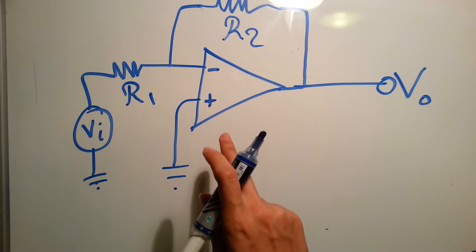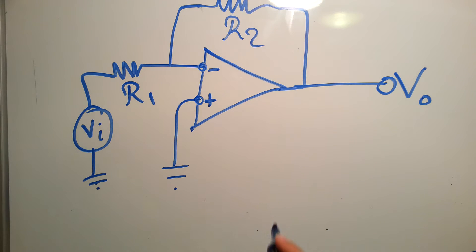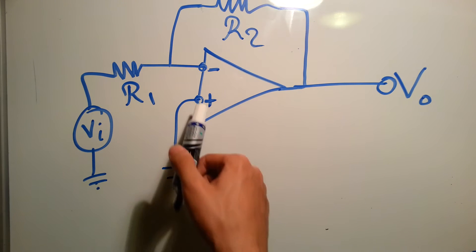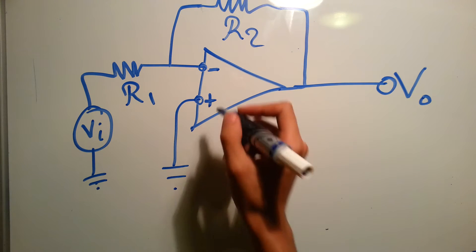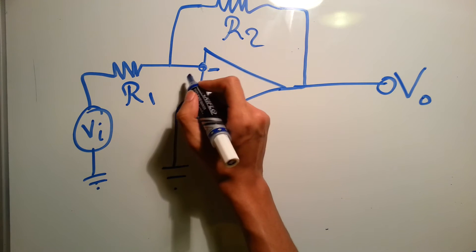So first of all you should know that these two nodes over here are always equal. V1 always equals V2. So in this example we have V2 connected to the ground, so this voltage equals 0 and you should know that this one equals 0.